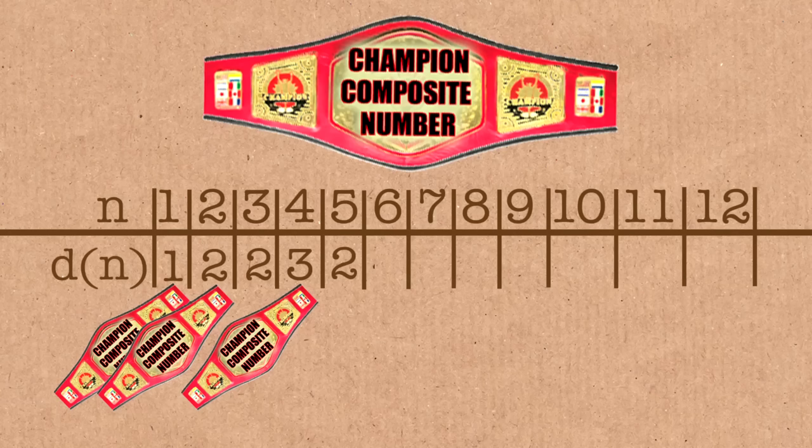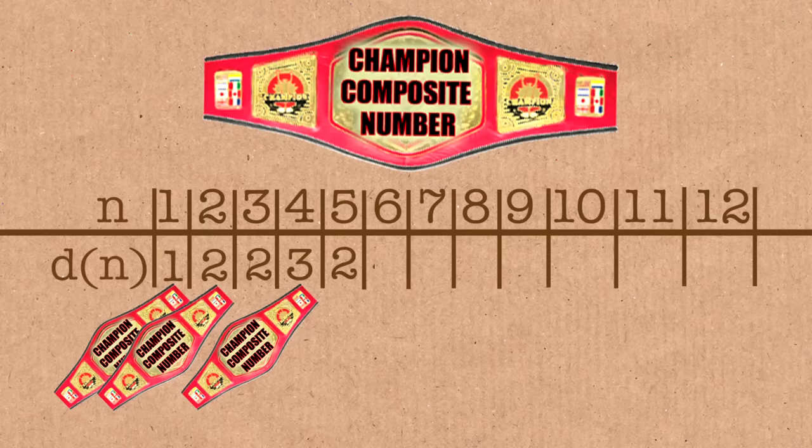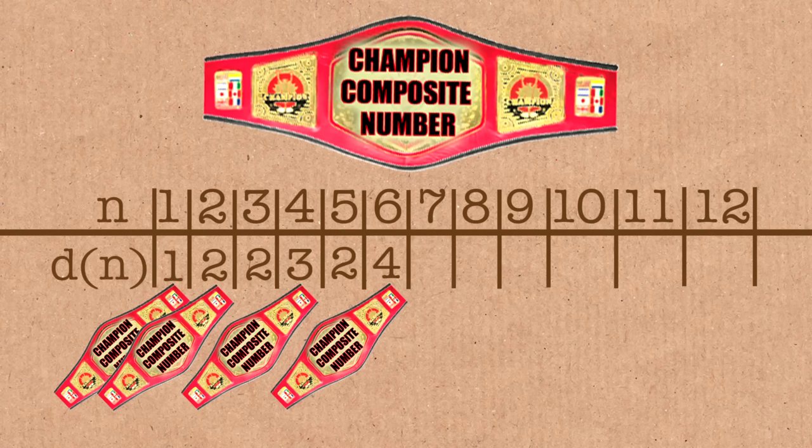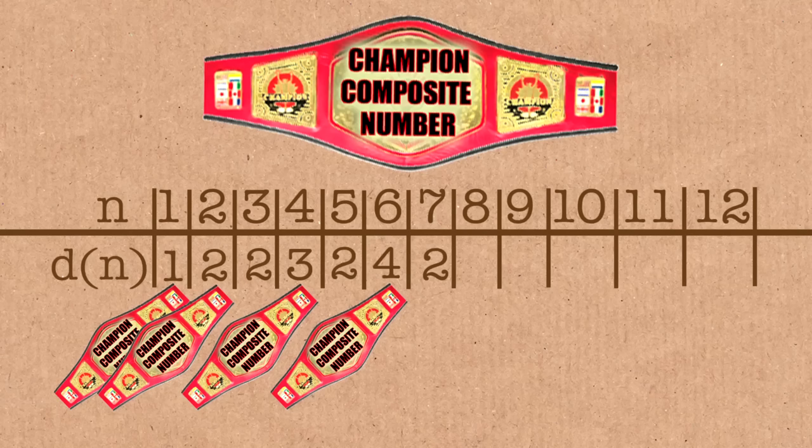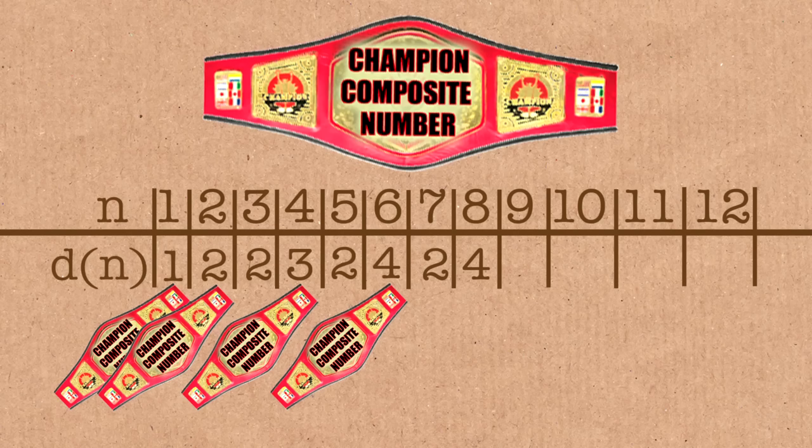But then six comes along. And oh dear, six. It can be divided by one, two, three, and six. Four divisors. And now six is ahead of the game. We keep going. Oh, seven. No, seven's no good. So prime, it has two divisors. Eight. Does eight do any better? So we can divide by one, two, four, eight. Four divisors. It's not better than six. So four divisors. No, it hasn't won anything.